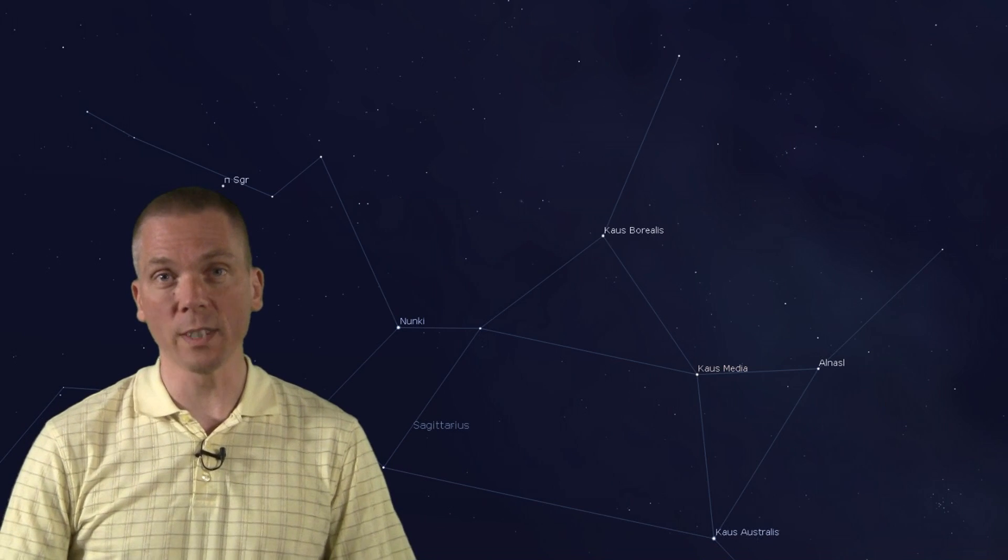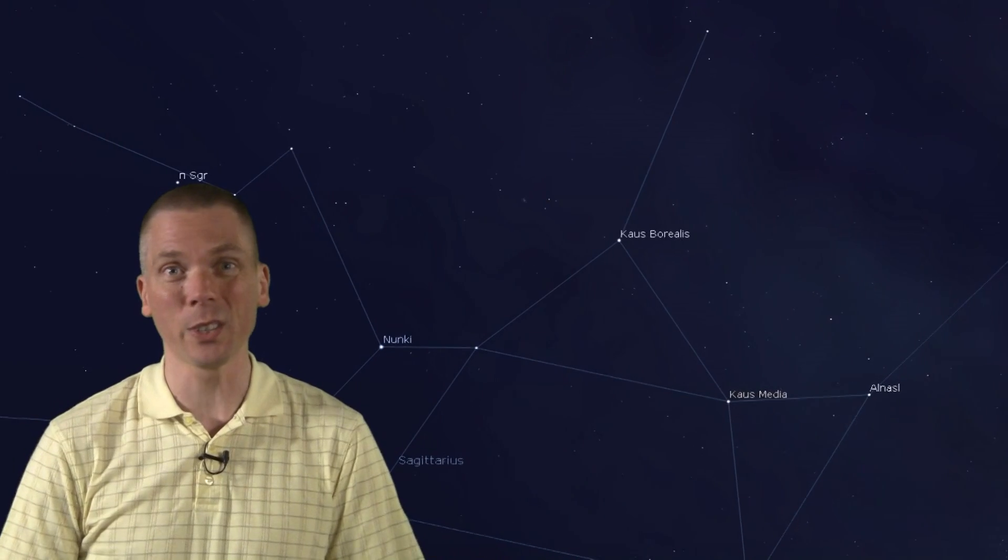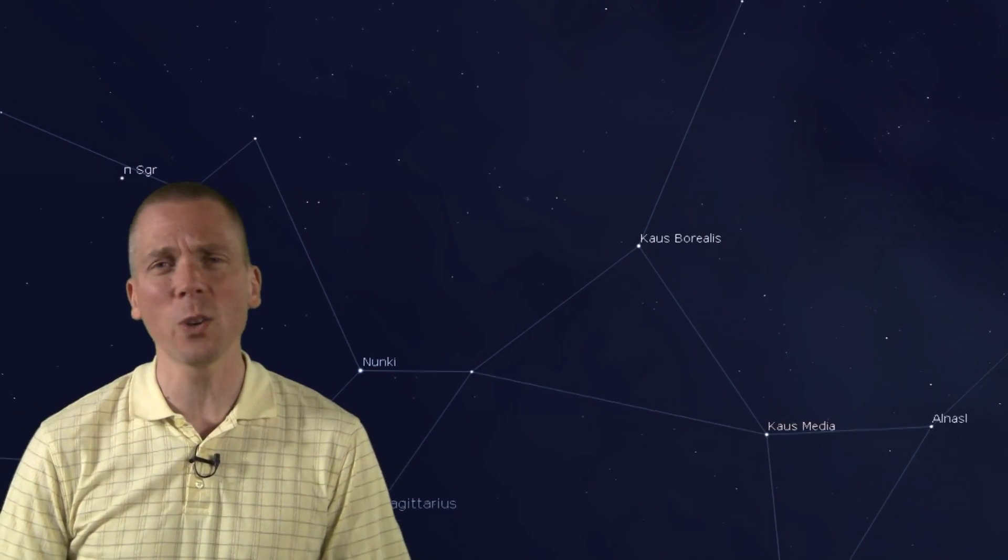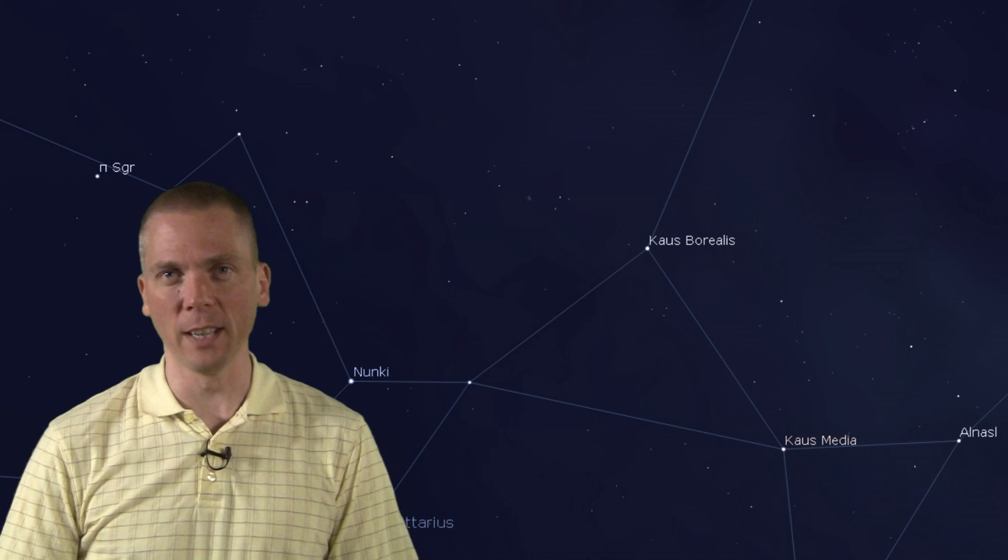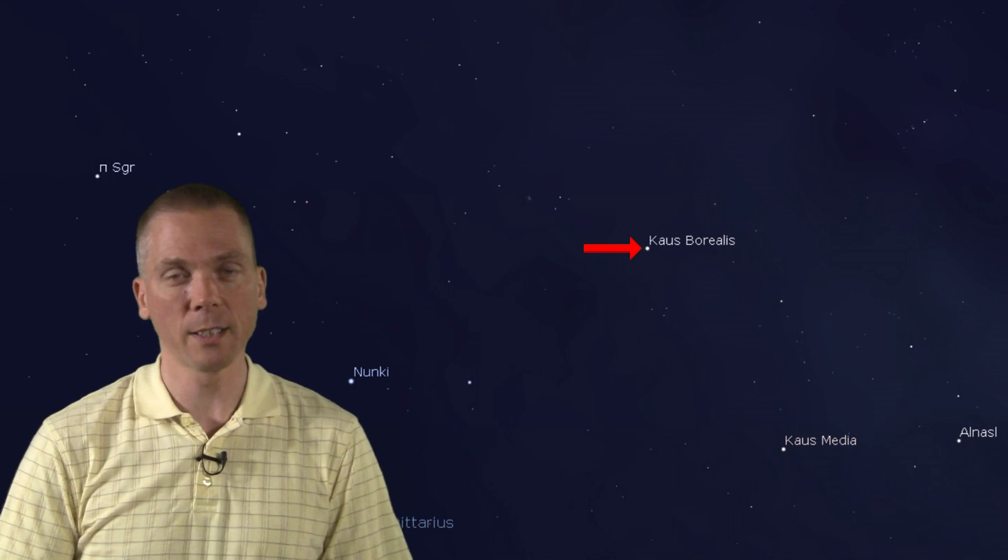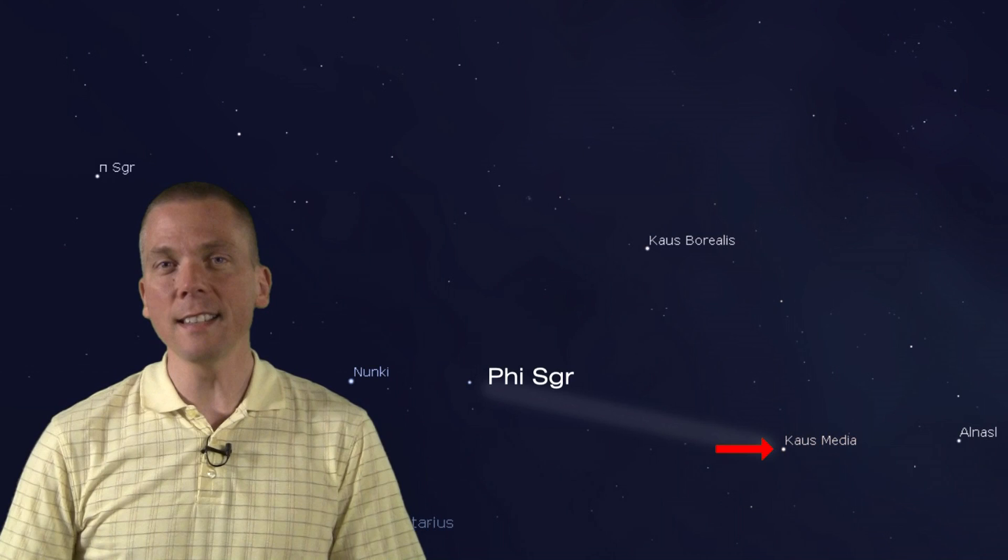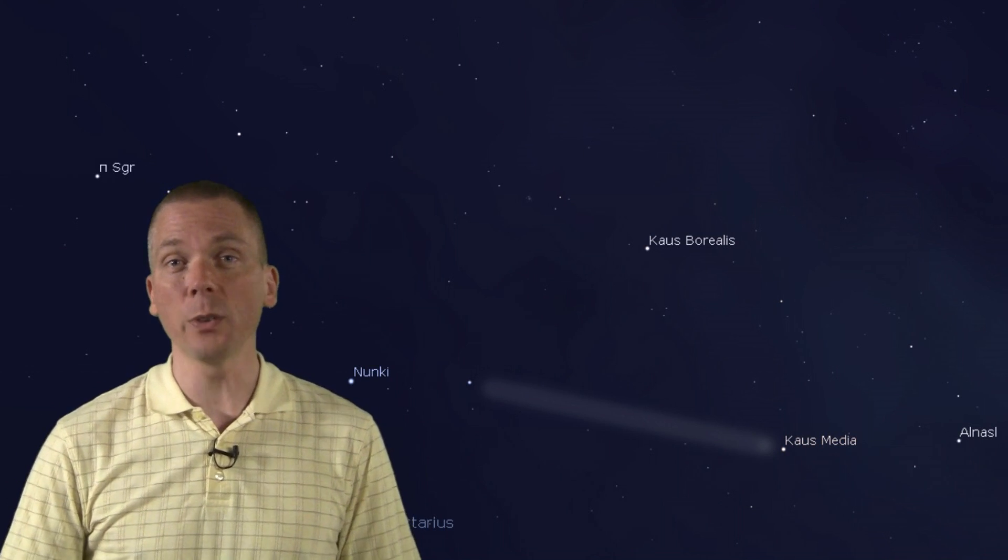Let's look up towards the lid of the teapot. The Sagittarius area is so dense with objects, you can really just sweep binoculars around this area and see so many objects. But we want to identify a few of these. First, go to the lid of the teapot at the 2.8 magnitude star, Caus Borealis. Look at the stars making up the bottom of the lid now, Caus Media and Phi Sagittarii. Make a line that is nearly parallel to that line, made by those two stars, but start at Caus Borealis, and move your binoculars towards the east, just 5 degrees. That's within a binoculars field of view.